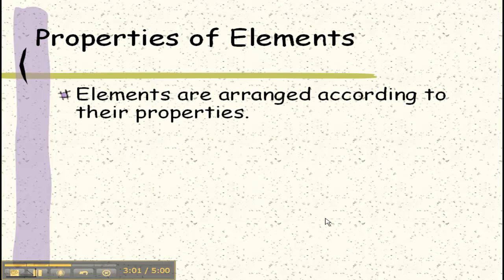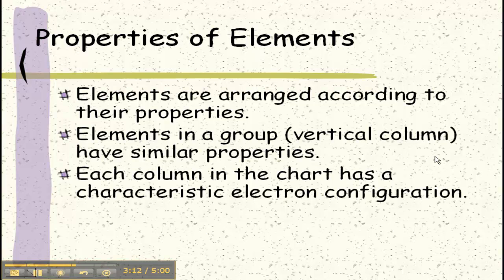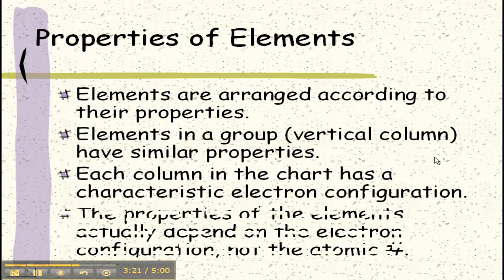We found that we arranged elements in order according to their properties. Elements in a group or a vertical column are going to have similar properties. Each column in the periodic table has a characteristic electron configuration. In other words, their electrons have very similar arrangements.